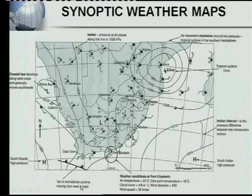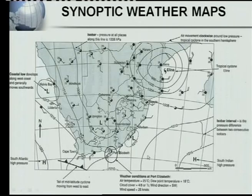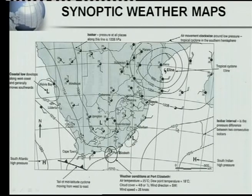On our map we also have a short tail of a mid-latitude cyclone - look what it looks like there. For the weather conditions at Port Elizabeth, they can ask: temperature 25, dew point 18, cloud cover half, wind direction southwest, wind speed 25 knots. The isobar interval is the difference in pressure between two consecutive isobars, which in this case would be 4 hectopascals - for example between 1012 and 1016.